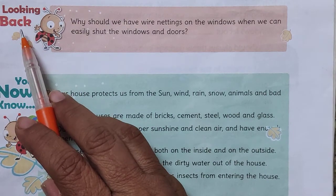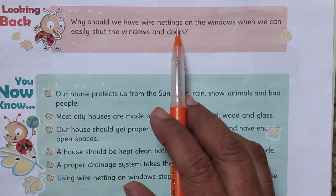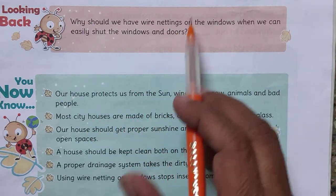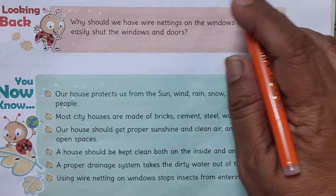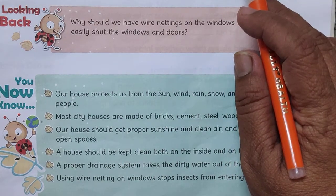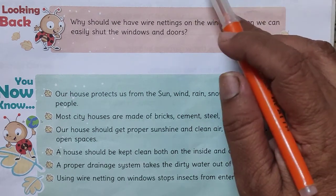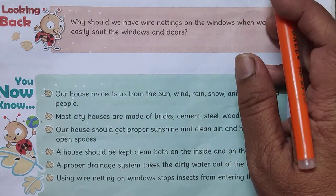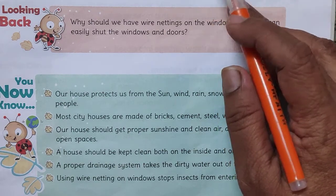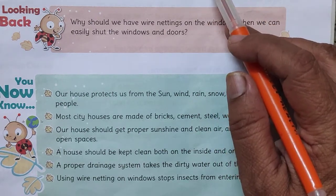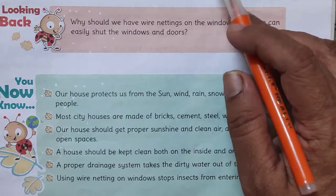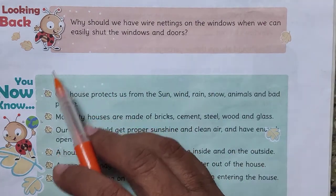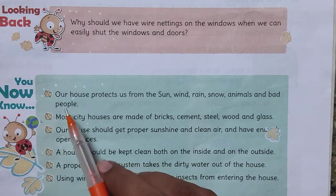Now let us revise — why should we have wire nettings on the windows when we can simply shut the doors and windows? Because netting on doors and windows allows wind, air, and sunlight to circulate through, while trapping mosquitoes and other insects, keeping them outdoors only. So the air and sunlight inside will be clean and sickness will not spread.